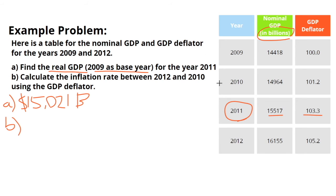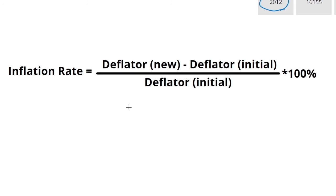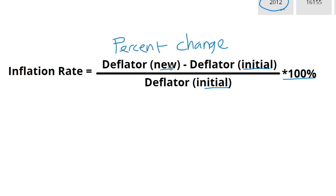Let's move on to part B. Here we have to calculate the inflation rate between the years 2012 and 2010 using the GDP deflator. The GDP deflator is a measure of inflation rate, and we calculate it by taking the percentage change in the GDP deflator. The percent change formula is: (new − old) / old × 100%. One way to remember that it's new minus old is that if it were old minus new and your newer value is larger than your older value, you'd get a negative number, even though that change is positive.